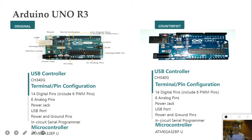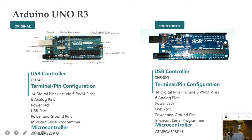For the USB controller and pins, there are also no differences. The USB controller is CH340G, same for the counterfeit. The terminal pins have a 4-pin configuration. The original has 14 digital pins including 6 pulse width modulation pins, same as the counterfeit. There are also 6 analog pins, a power jack, USB port, power and ground pins, and an in-circuit serial programmer — all the same for both.